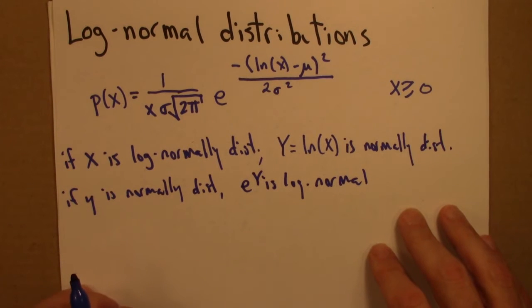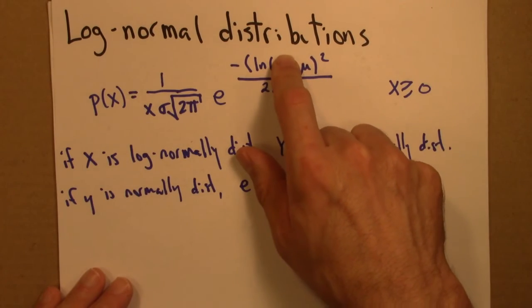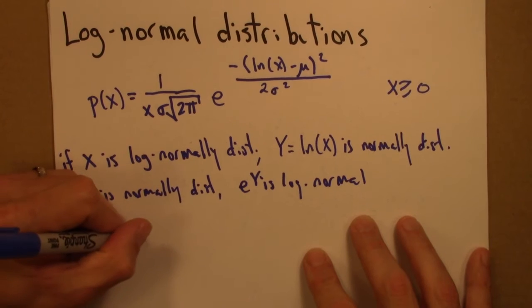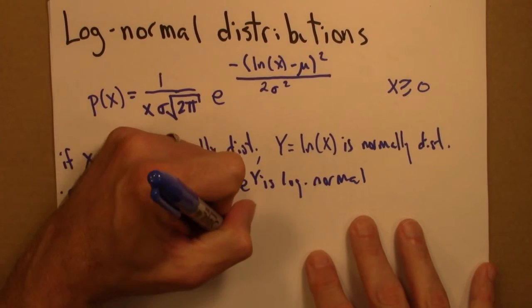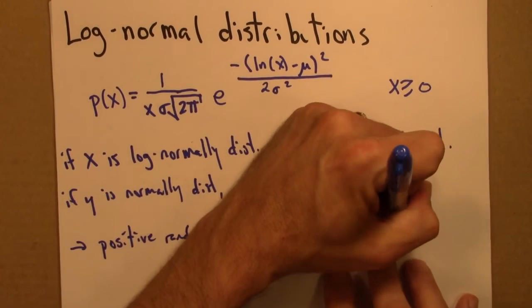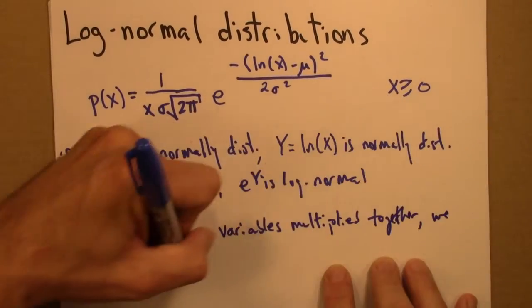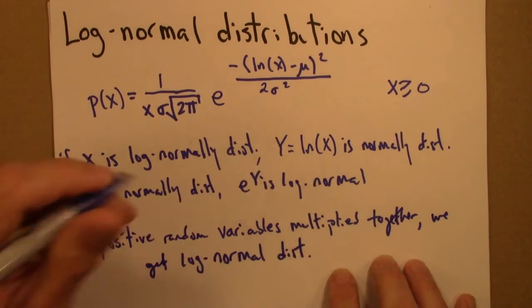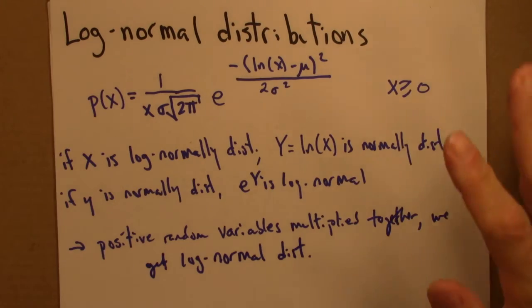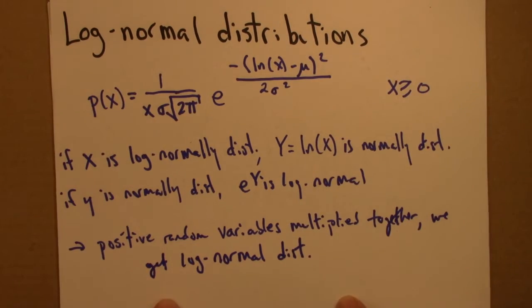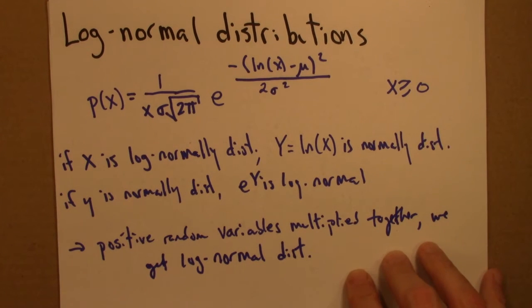So we saw when looking at the central limit theorem that normal distributions arise when we have a whole bunch of random variables added together. Well log-normal distributions arise when we have a whole bunch of positive random variables multiplied together. So if we have positive random variables multiplied together, we get a log-normal distribution.